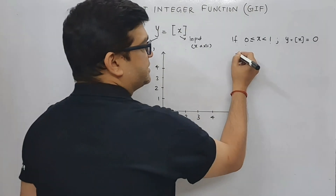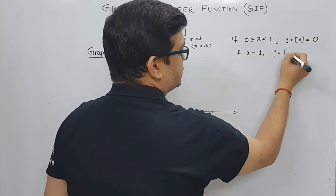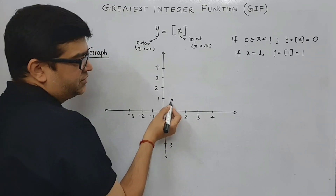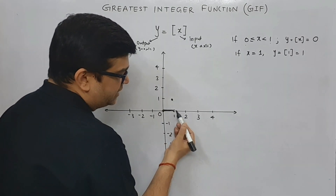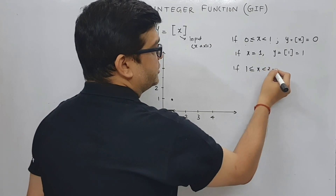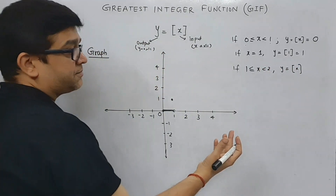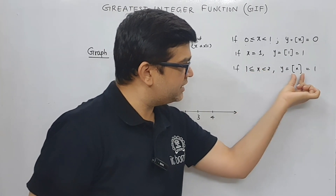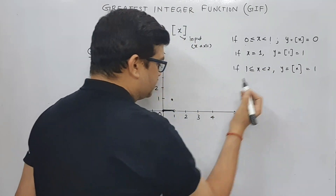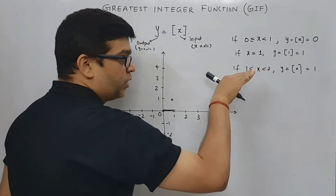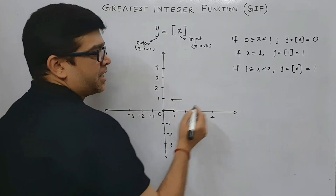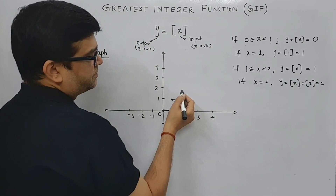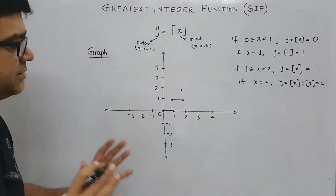When the input is exactly one, box of one is simply one, so the y value shifts to one. Moving on, between one and two, the output y — which is box of x — will remain at one, since any number between consecutive integers gives the left integer. The moment x becomes two, box of two becomes two, so the graph jumps up, and there will be a hole at the previous level.